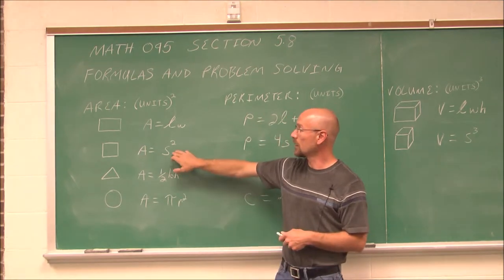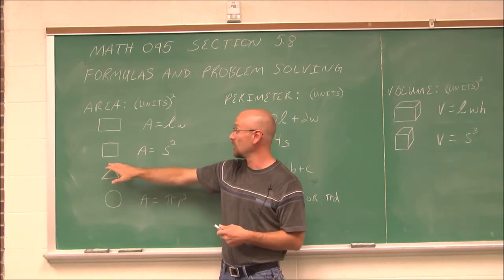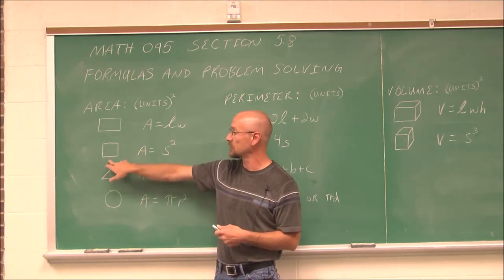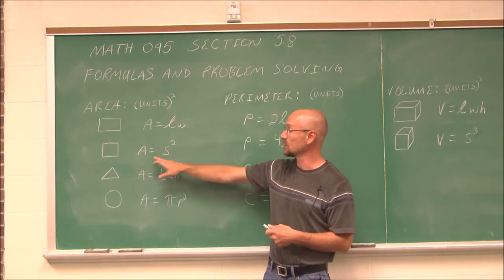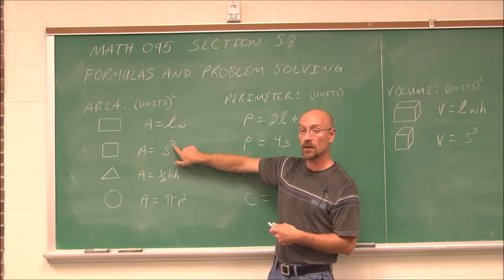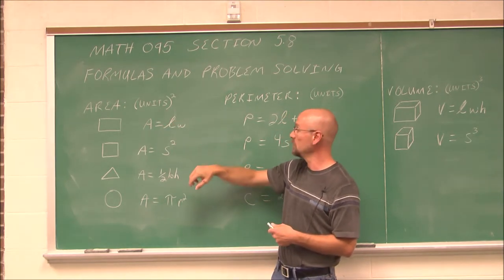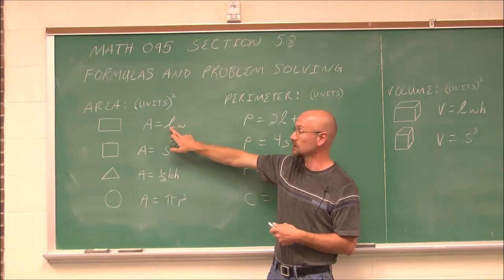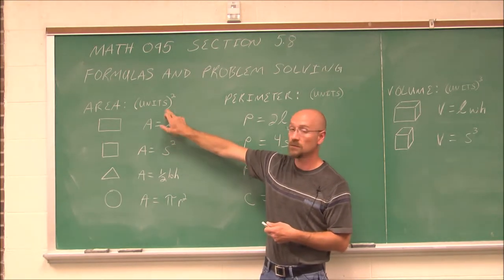For a square, all four sides are the same, so the area is side times side, which is the side squared. That's also why we have units squared — a unit times a unit gives squared units. The same applies to rectangles: length times width is a unit of measurement times a unit of measurement, giving squared units.